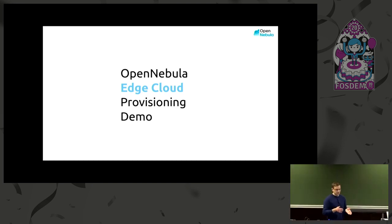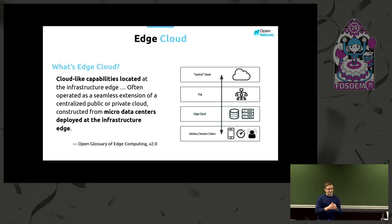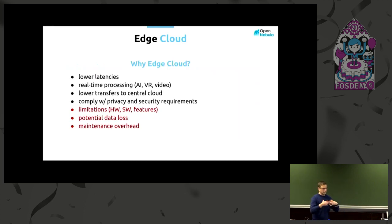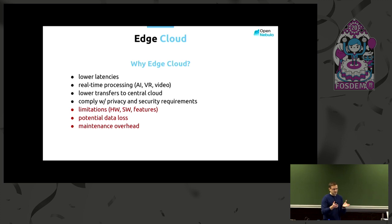Now let's focus on the edge cloud. What is edge cloud for us? The edge clouds are micro data centers with some kind of cloud-like capabilities, deployed very near to the end users or end devices they need to interact with. The benefits are to provide lower latencies, provide new features which lower latencies allow, and preprocessing can happen in the edge cloud so data sent to the central cloud is much lower.